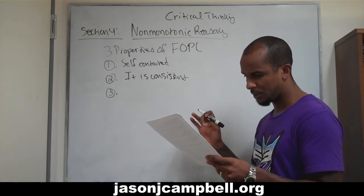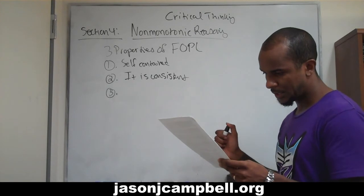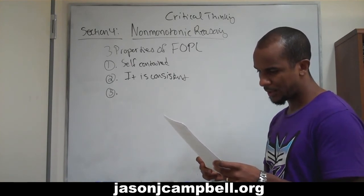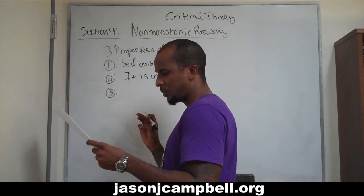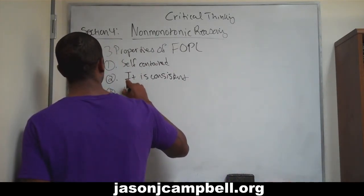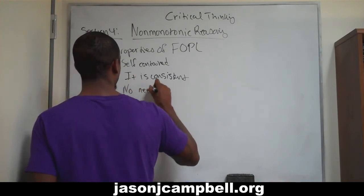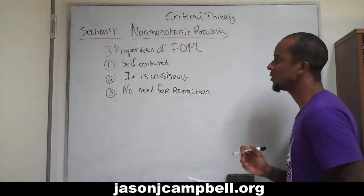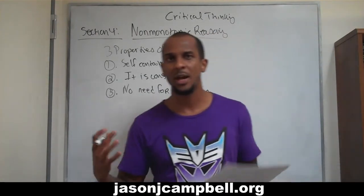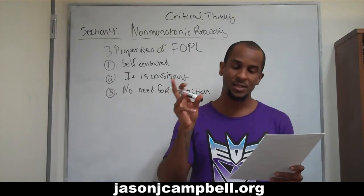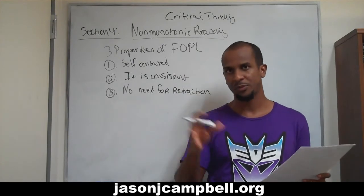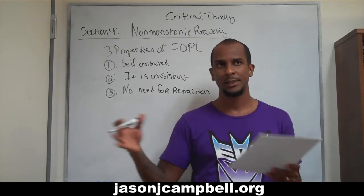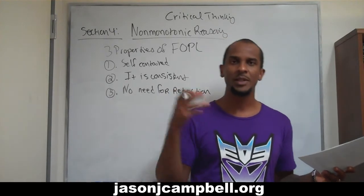Nothing will be retracted from the set of facts that are known to be true — this property is called monotonicity. There's no need for retraction. There's no fluctuation in the truthfulness or the facts throughout time. There's no uncertainty, there's no fluctuation — they remain consistent.